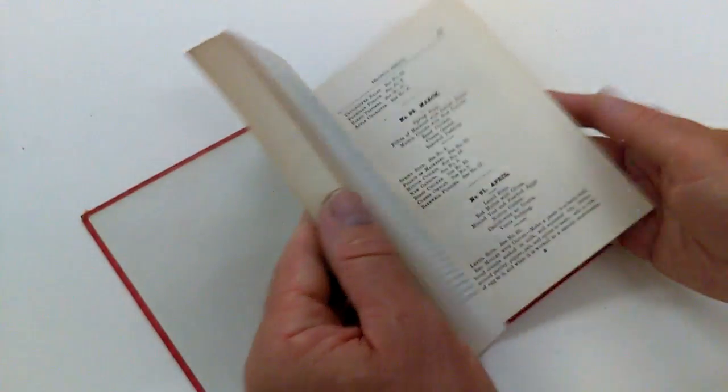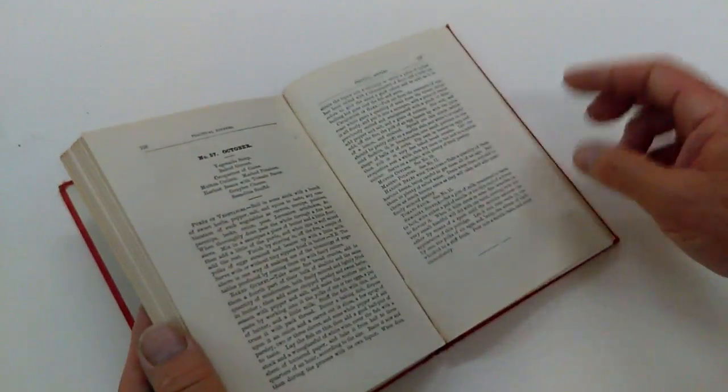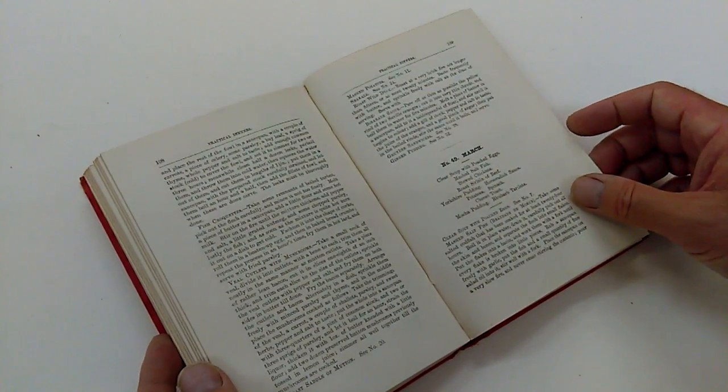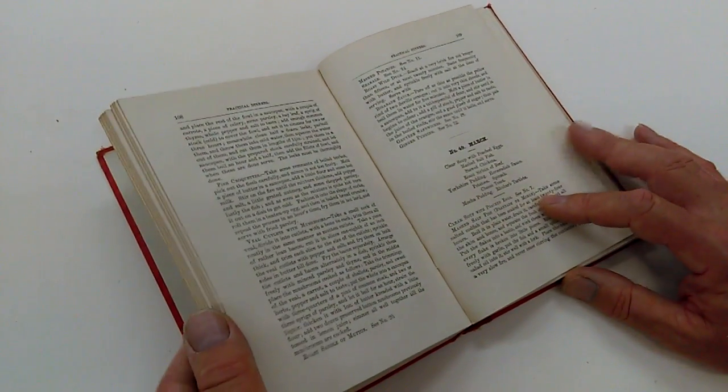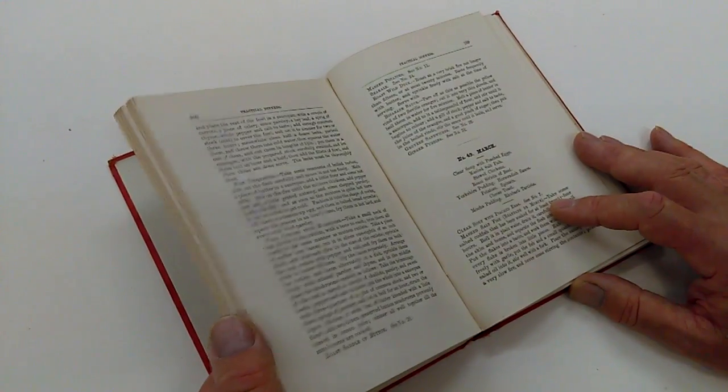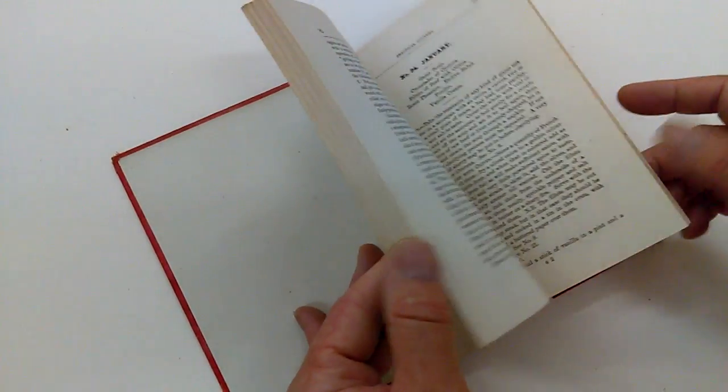And it's basically around 100 dinners just over for all the months of the year with suitable menus: clear soup with poached eggs, mashed salt fish, stewed chickens, roast sirloin of beef, Yorkshire pudding, et cetera.